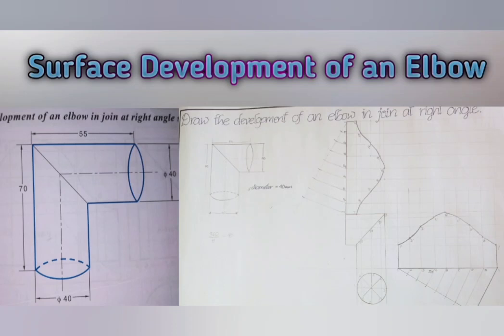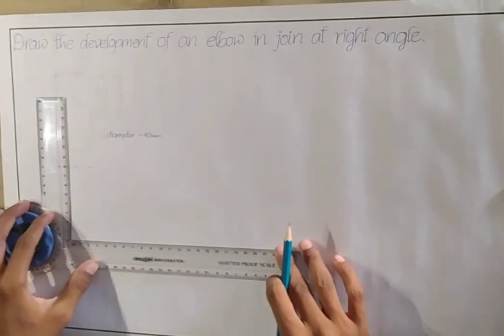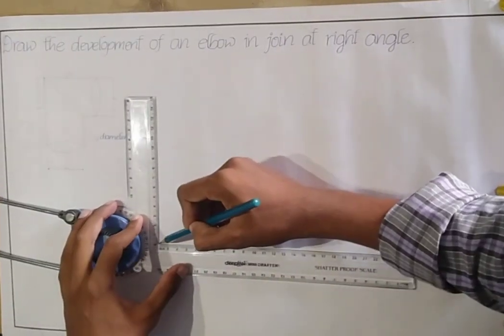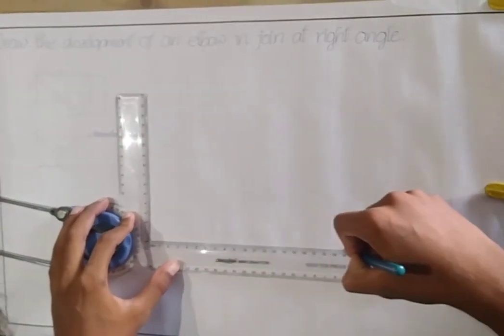Hello everyone, welcome to my channel. Today in this video I have done a surface development of an elbow. Let's get started. The question is: draw the development of an elbow in joint at right angle.